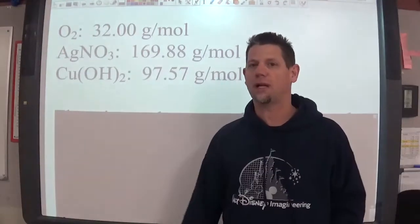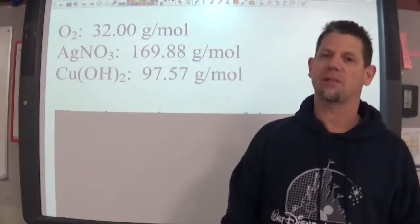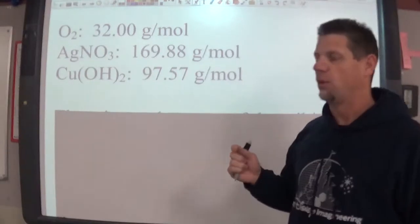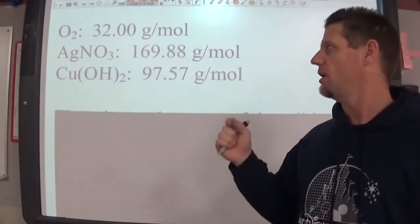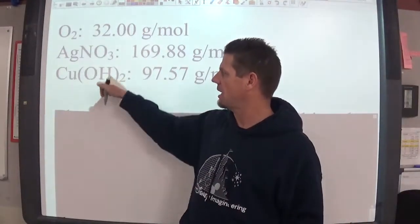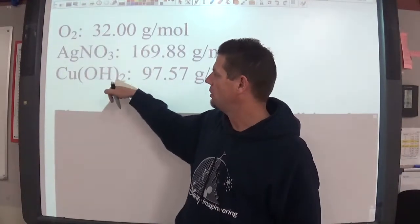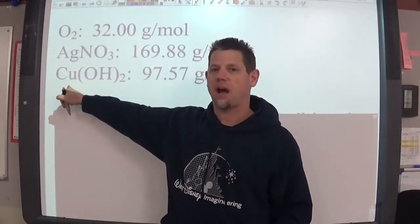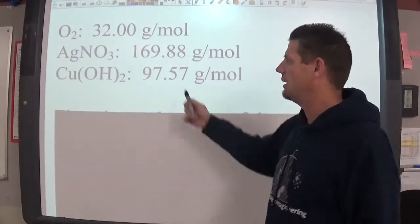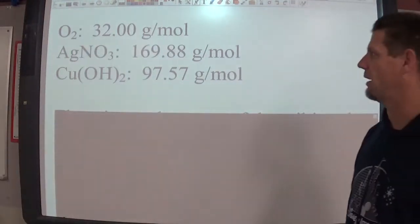Cu(OH)2, copper 2 hydroxide, was one of the byproducts of a reaction that we've done a couple times. When you put these things together, they form hydroxide as a minus one charge. So there needs to be two of them because the copper is a plus two charge. Its molar mass is 97.57 grams per mole.